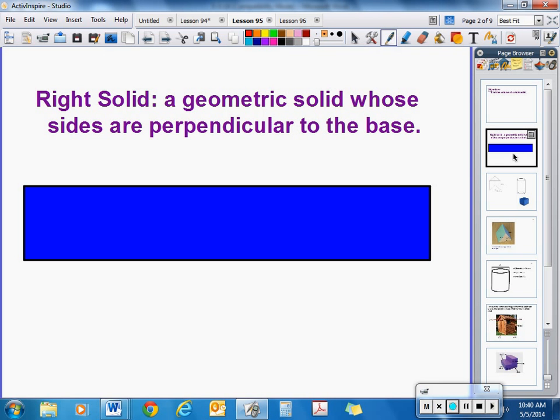A right solid is a geometric solid, so we're talking about three dimensions here, whose sides are perpendicular to the base.